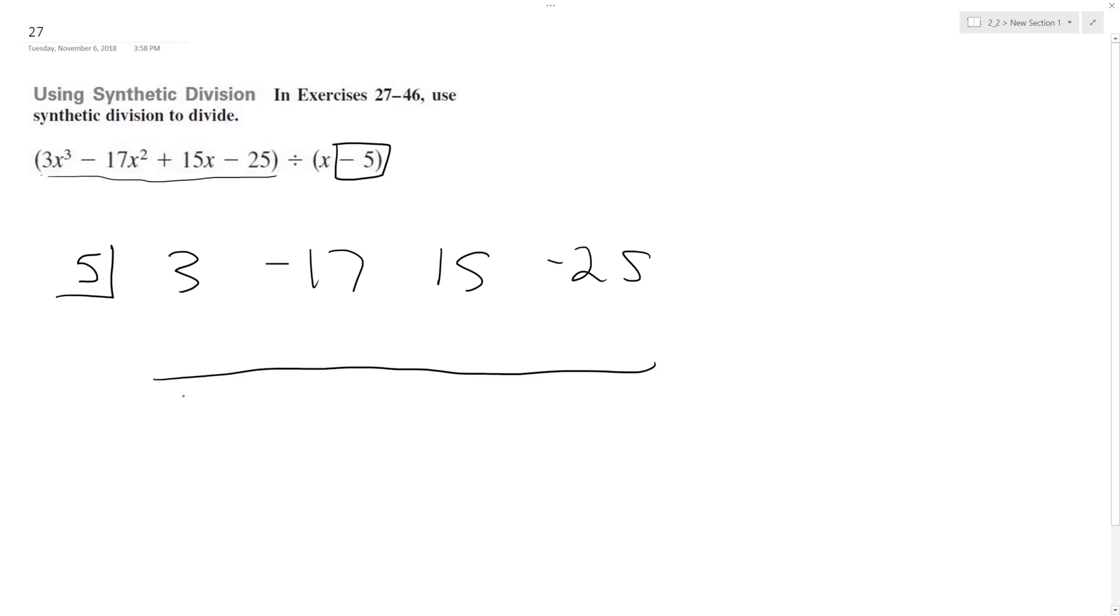Pull down the 3 here, multiply 5 by 3 to get 15. Add these to get negative 2, then negative 10.